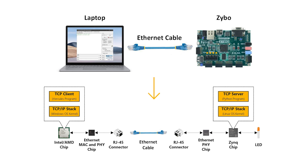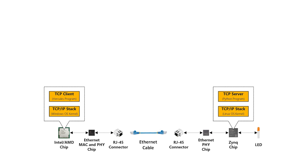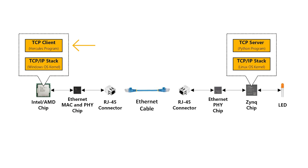Let's use the OSI model to explain in more detail what happens under the hood in the system we are about to build. The Hercules program is an application that accesses the TCP connection, which operates at the transport layer, layer 4. This application connects to the TCP/IP stack at layers 3 and 4, which is implemented as software in the Windows or Linux kernel. The program and TCP/IP stack run on the processor, which can be either Intel or AMD. At the hardware level, specifically in the PCB of the motherboard, the processor connects to the Ethernet MAC and PHY chips. The Ethernet MAC is layer 2, and the Ethernet PHY is layer 1.